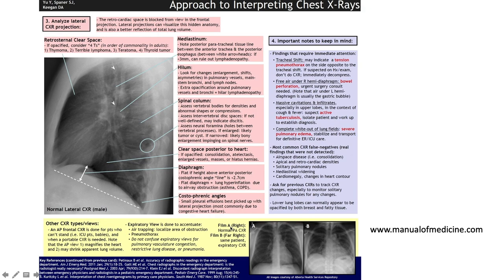On the lateral X-ray, ascertain the retrosternal cardiac space — it should be clear. If it's not clear, consider the infamous T's: thymoma, lymphoma (terrible), teratoma, and thyroid tumour.